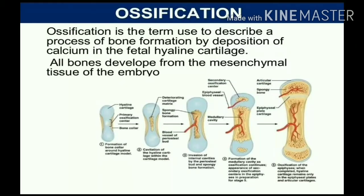Ossification is the term used to describe a process of bone formation by deposition of calcium in the fetal hyaline cartilage. All bones develop from the mesenchymal tissue of the embryo. Bone formation starts from the embryo's mesenchymal tissue, and the bone formation by calcium deposit in hyaline cartilage is called ossification.